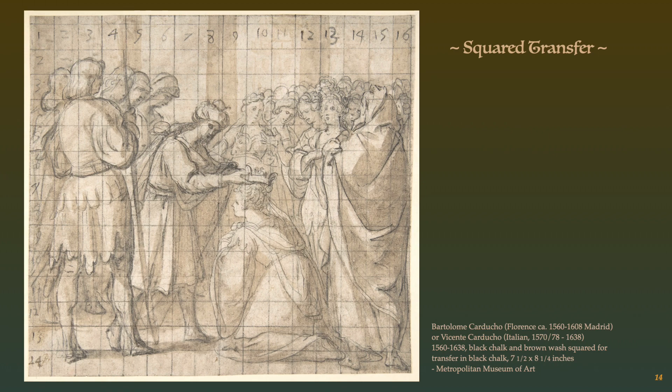Once a drawing was finalized for the compositional design, it was usually transferred in one of three methods. This small drawing — only seven and a half by eight and a quarter inches — demonstrates the squared transfer method. Since sheets of paper were an extremely expensive commodity, a squared transfer enabled a small drawing to be enlarged onto a huge panel or wall, requiring the squares to be numbered. For instance, one-inch squares can be enlarged to one-foot squares, and the drawing would be carefully redrawn from square to square in the larger size.